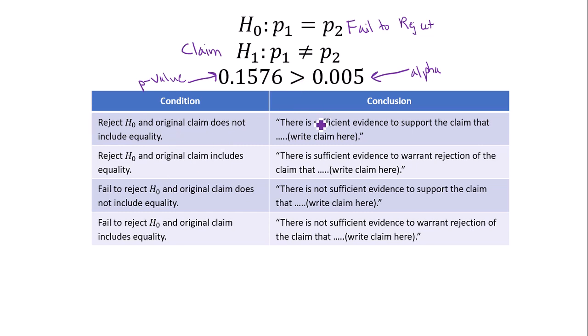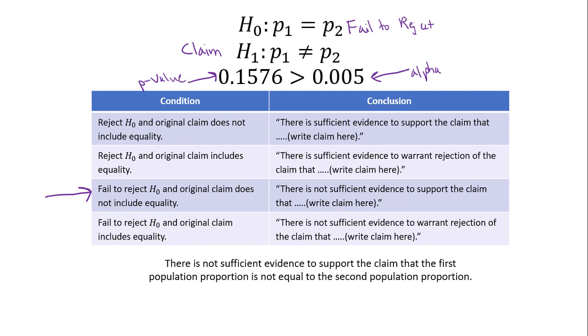So look at your summary statements here for hypothesis testing. We fail to reject H0, and the original claim does not include equality. So we form our statement in the form shown here. And this tells us that there is not sufficient evidence to support the claim that the first population proportion is not equal to the second population proportion.